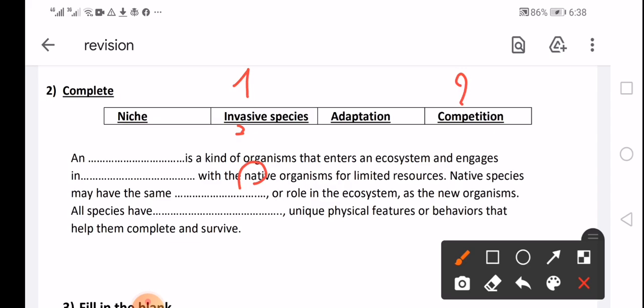Non-native species is a kind of organism that enter an ecosystem, enter a new ecosystem and engage in competition with a native organism for limited resource. Native species may have the same organism niche. Niche means role of organism in the ecosystem. As a new organism, all species have adaptation.